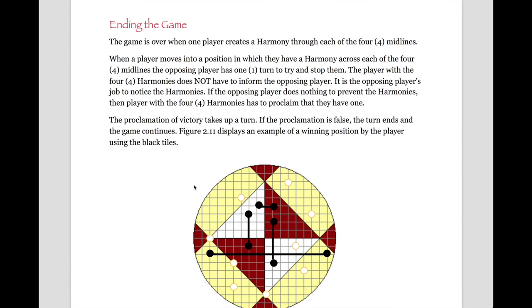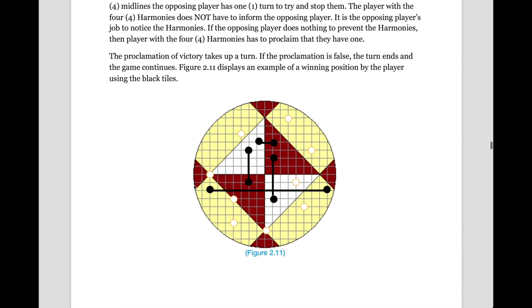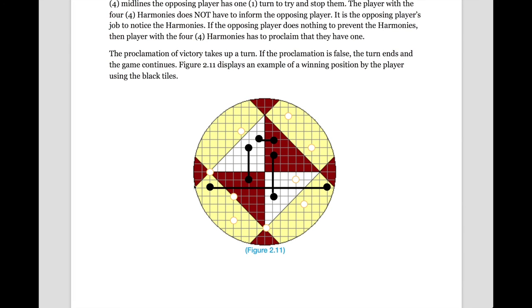Ending the game. The game is over when one player creates a harmony through each of the four midlines. When a player moves into a position in which they have a harmony across each of the four midlines, the opposing player has one turn to try and stop them. The player with the harmonies does not have to inform the opposing player that he has the harmonies. It is the opposing player's job to notice these harmonies. If the opposing player does nothing to prevent the harmonies, then the player with the four harmonies has to proclaim that they have won. Keep in mind that the proclamation of victory takes up a turn, and if it is false, the turn ends and the game continues.